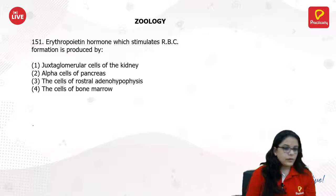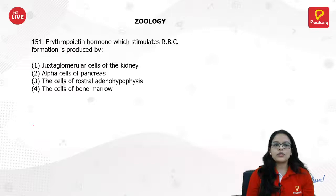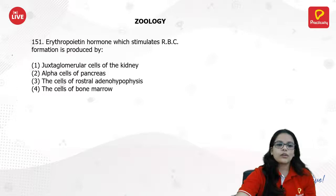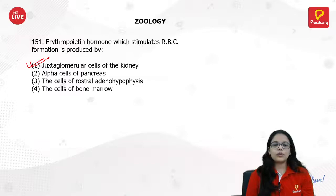Erythropoietin — the hormone which stimulates RBC formation — is produced by the juxtaglomerular cells of the kidney.